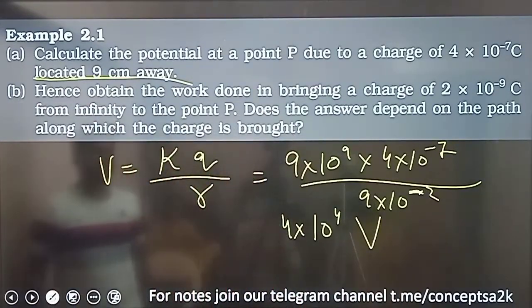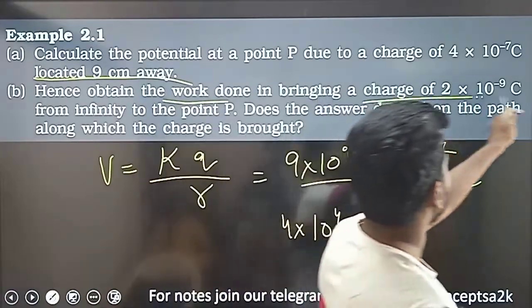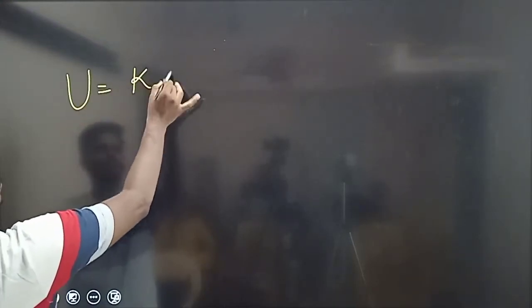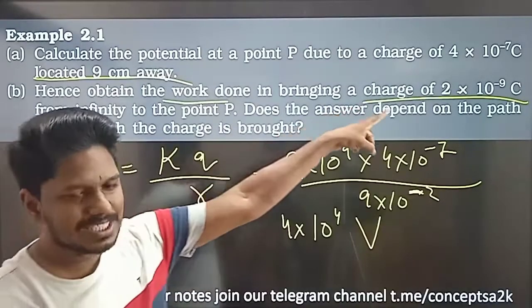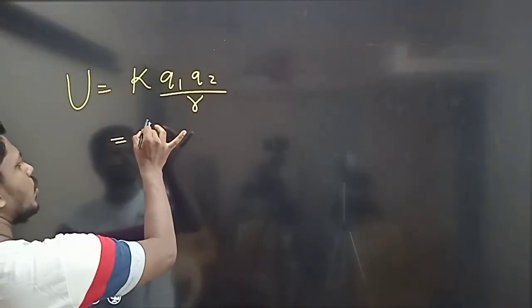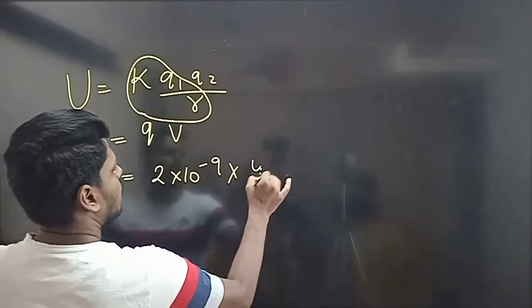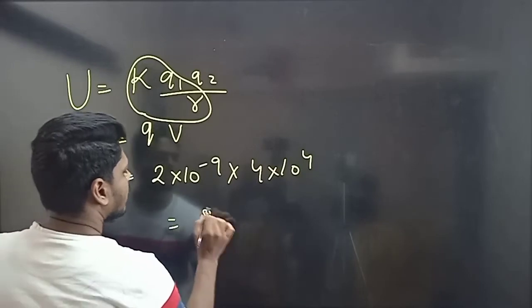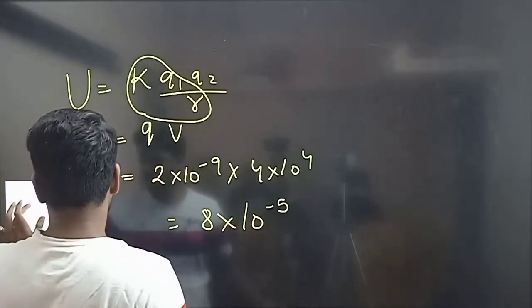The result comes out to 10 power minus 10. Hence, obtain the work done in bringing a charge from infinity to a point using the potential energy formula. Substituting the values with the second charge of 2 into 10 power minus 9, the answer is 18 into 10 power minus 5 joules — that is the work done.